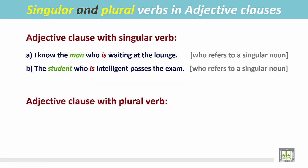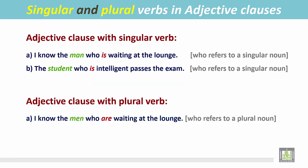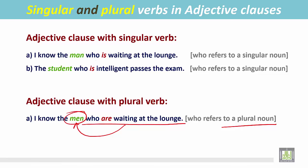Adjective clause with plural verb. See the examples. 'I know the men who are waiting at the lounge.' The adjective clause begins with 'who' and modifies the noun immediately. The noun is 'men,' which is a plural noun, so the verb inside the adjective clause is also plural.